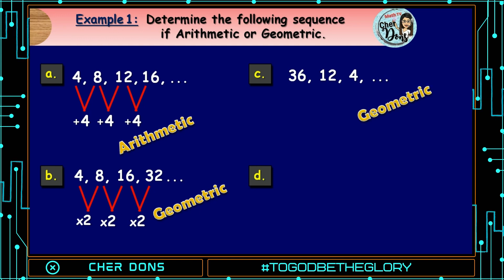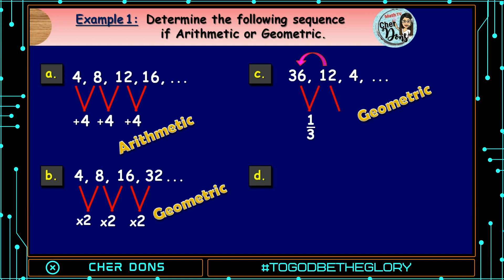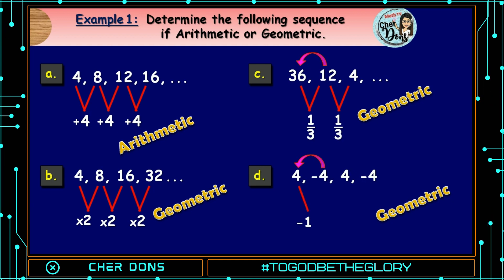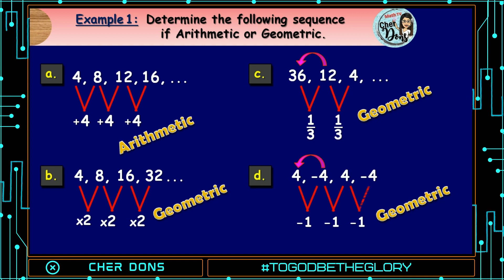Letter C is a geometric sequence. We multiply the preceding term by the common ratio. The common ratio is found by dividing the second term by the first: 12÷36 = 1/3. So 36×(1/3)=12, and 12×(1/3)=4, and so on. Letter D: 4, −4, 4, −4. It is also a geometric sequence with a common ratio of −1, since −4÷4=−1. So 4×(−1)=−4, −4×(−1)=4, and 4×(−1)=−4.